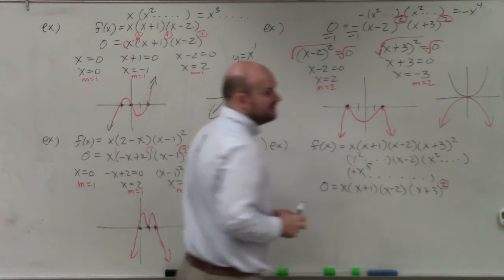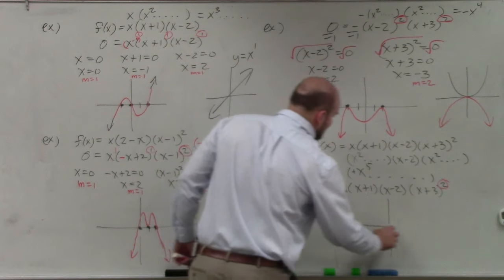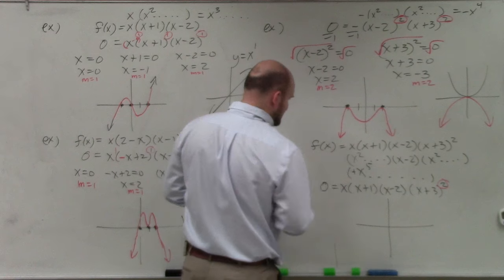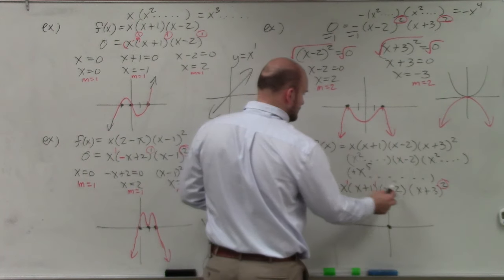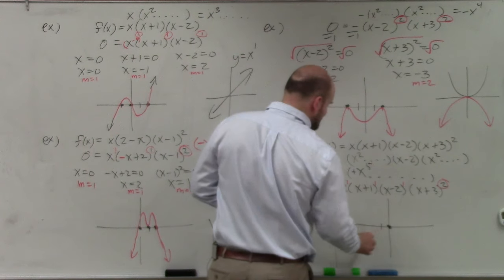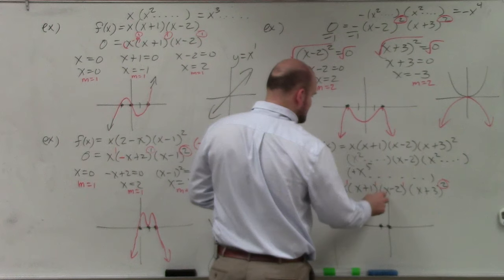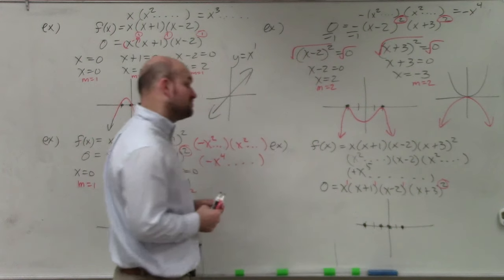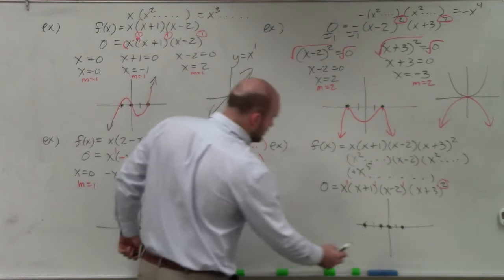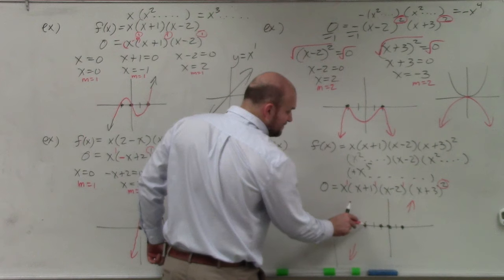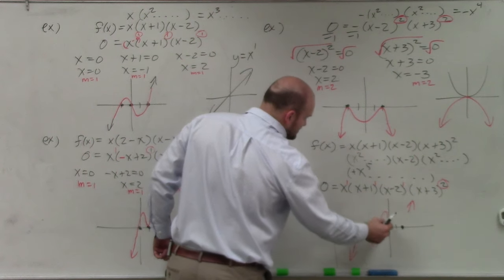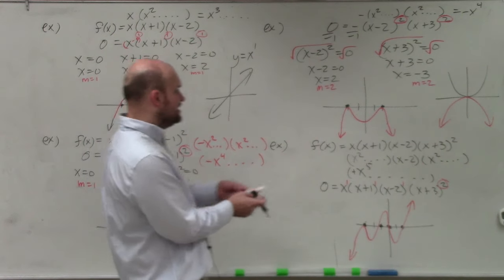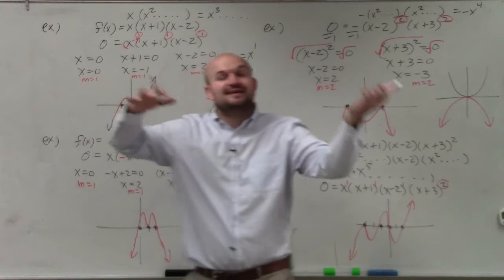I can identify the zeros directly: x equals 0 with multiplicity 1, x equals negative 1 with multiplicity 1, x equals positive 2 with multiplicity 1, and x equals negative 3 with multiplicity 2 — so that one bounces. The end behavior is fall left, rise right. The graph bounces at negative 3 (even multiplicity) and crosses at the other three zeros. That's just a rough representation.